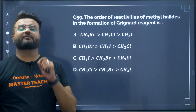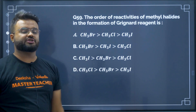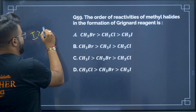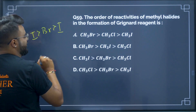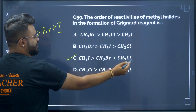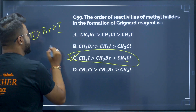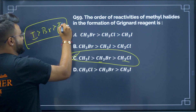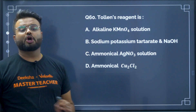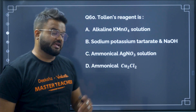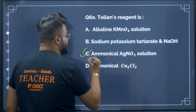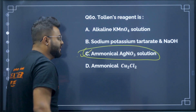Question number 59: the order of reactivity of methyl halides in the formation of Grignard's reagent. The reactivity order is iodine > bromine > chlorine. Therefore option C will be your correct answer. Question number 60: Tollens reagent is ammoniacal silver nitrate solution. Therefore option C will be your correct answer.